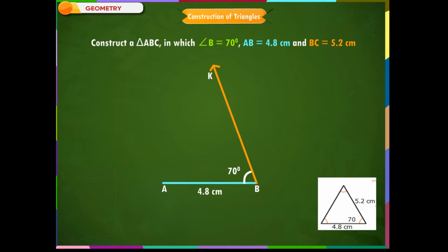Step 3: On the line segment BK, cut off BC equal to 5.2 cm. Step 4: Join A and C. Triangle ABC is the required triangle.